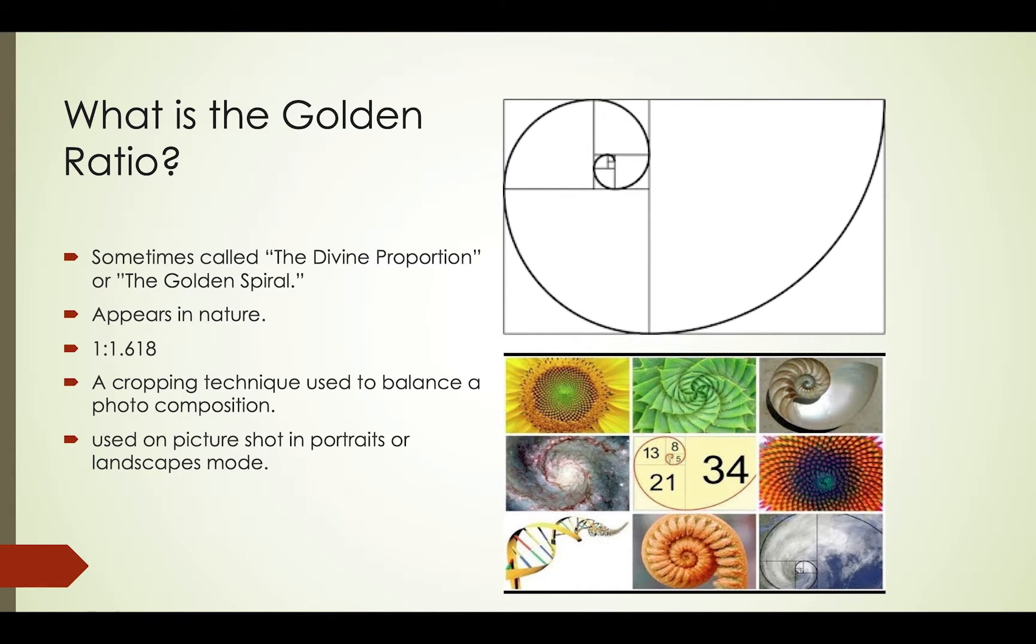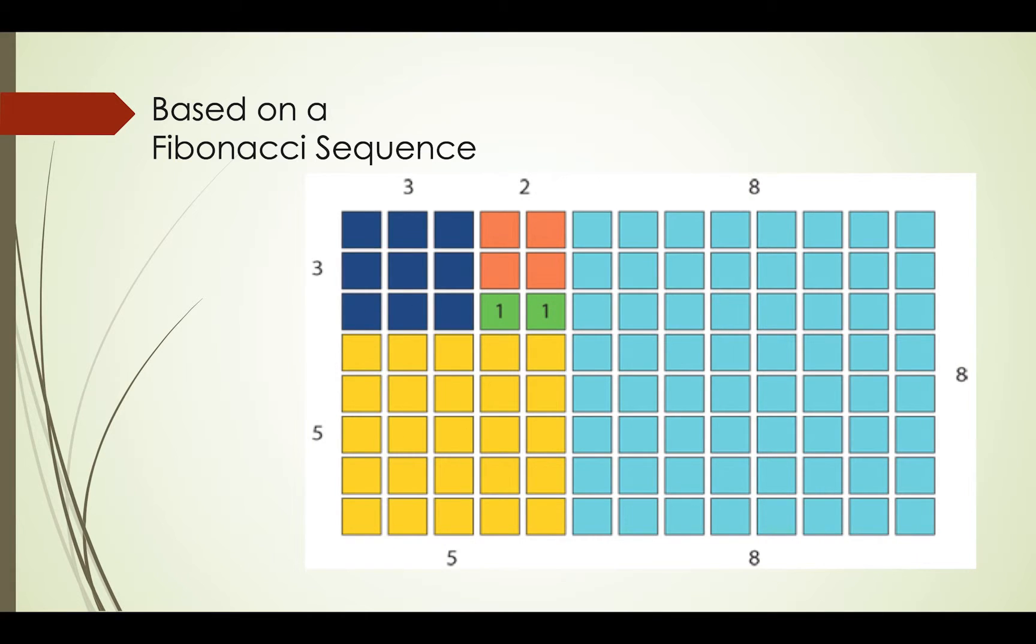A little bit of background on the golden ratio: it is based on the Fibonacci sequence. The Fibonacci sequence is calculated by adding the previous two numbers to get the number that we are currently at. So zero and one gives us our one by one, our one by one gives us our two, two and one gives us three, three and two gives us five, five and three gives us our eight, eight and five will give us thirteen, thirteen and eight will give us twenty-one, and so on and so forth.